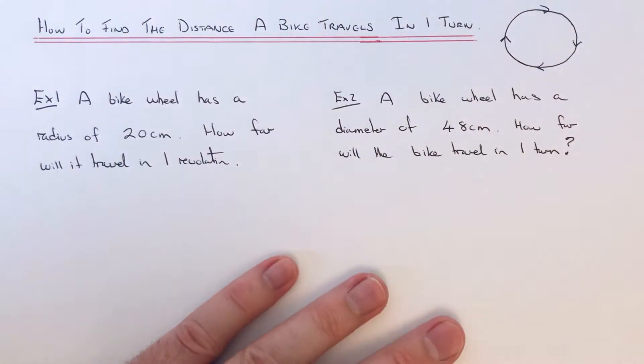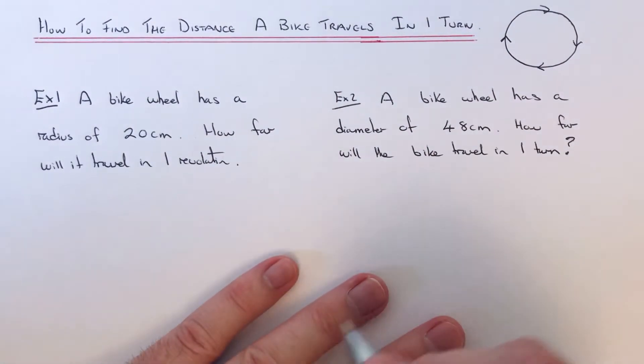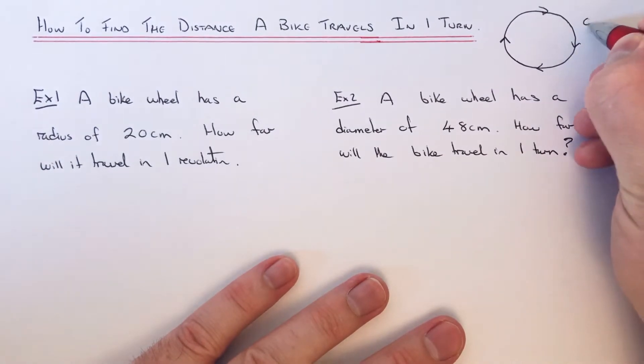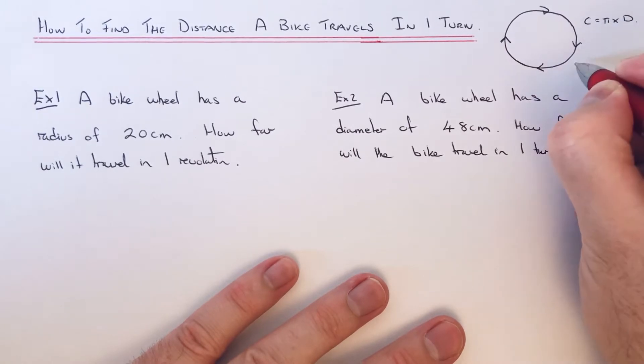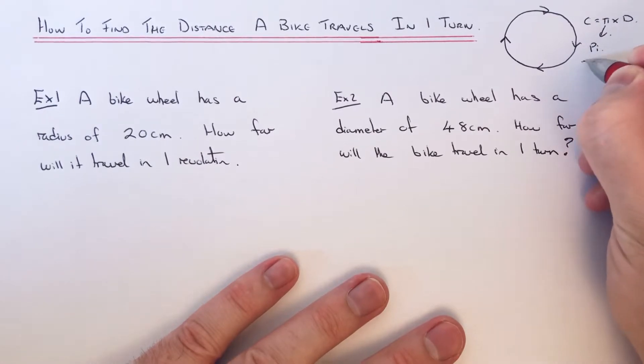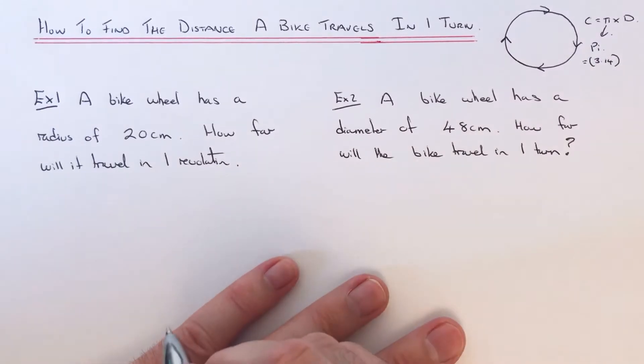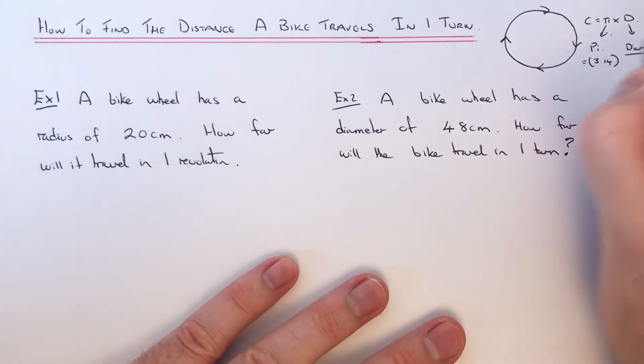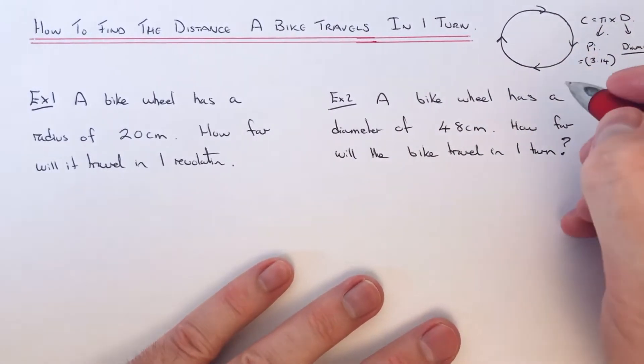as the distance the bike will travel in one turn. The formula for working out the circumference is pi times the diameter of the circle. That symbol there is pi, which is 3.14 if you don't have a scientific calculator. D is the diameter of the circle, the